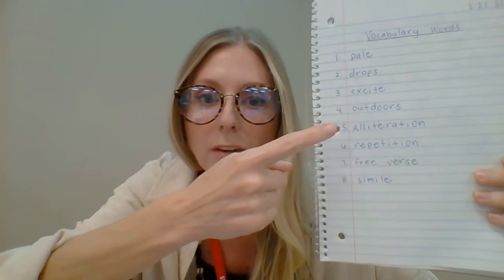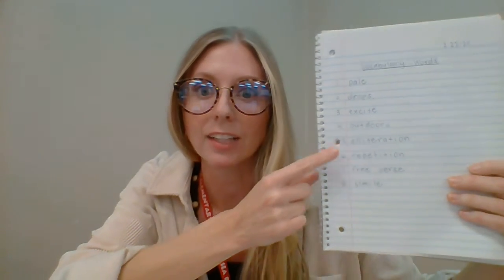I want you to find examples of alliteration. Alliteration is repeating the same sound at the beginning of each word. Our example was 'Sally sells seashells by the seashore.' It has a flow to it because each word has the same sound at the beginning — it repeats that same sound. That's alliteration.